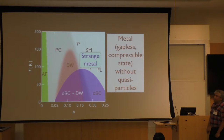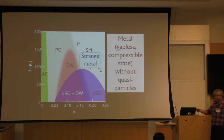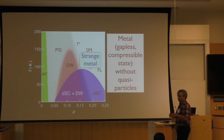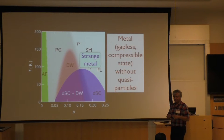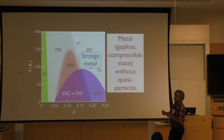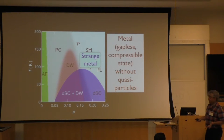So what I'm going to do is: there's one category of candidates for strange metals where a fair amount of progress has been made. If you start from a Fermi liquid and have some broken symmetry — for example, a nematic order parameter where you break 90 degree rotation symmetry — right at the critical point you do get an example of what looks like a strange metal.